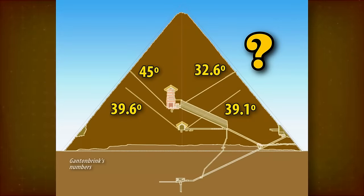As we've just seen, the proposed star alignments are ambiguous and inaccurate. They depend on which angles you deduce from the shafts, and which stars you deem important among several on similar paths.